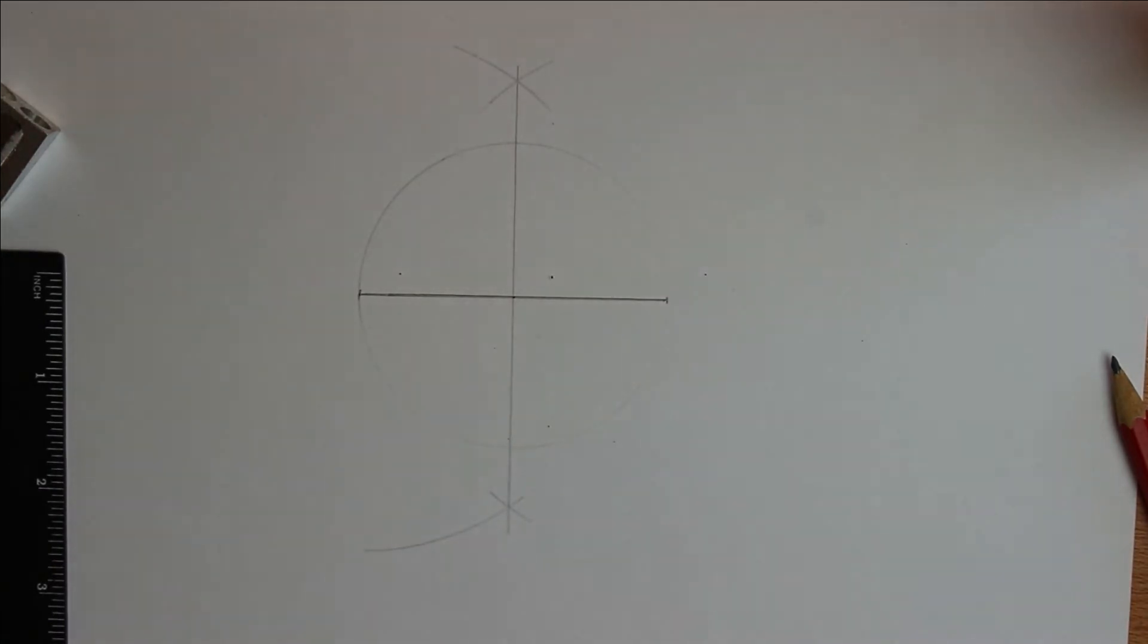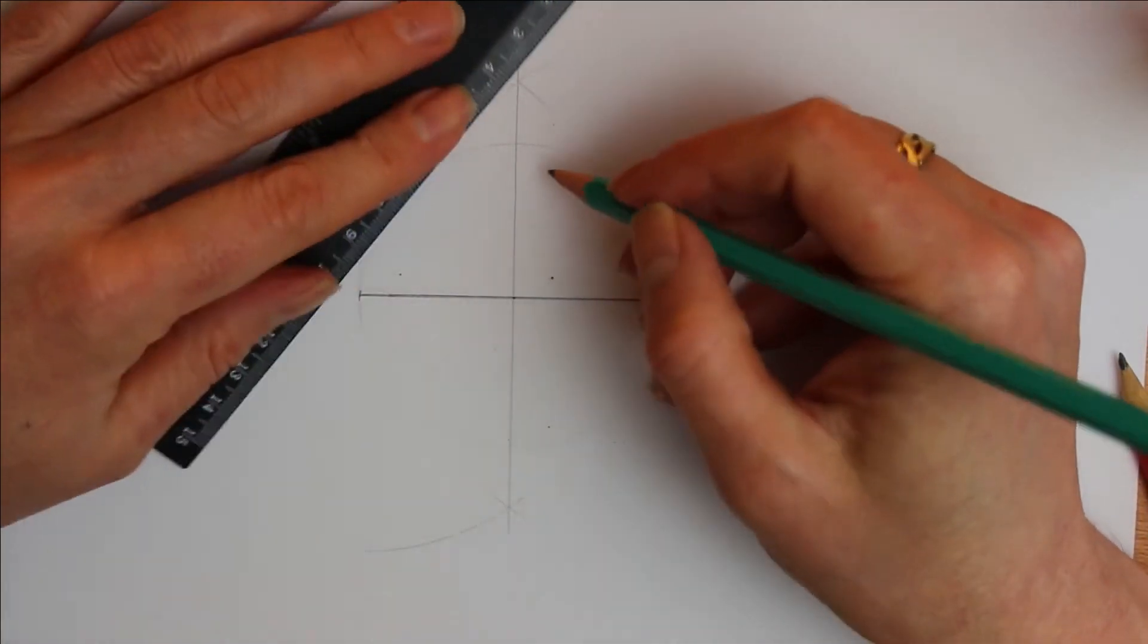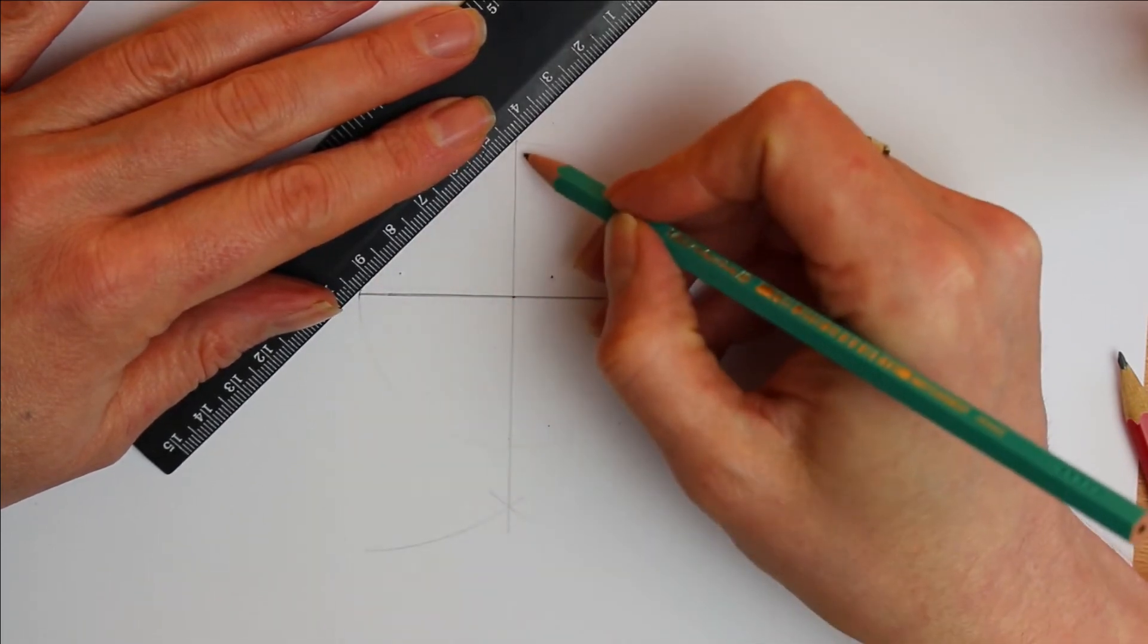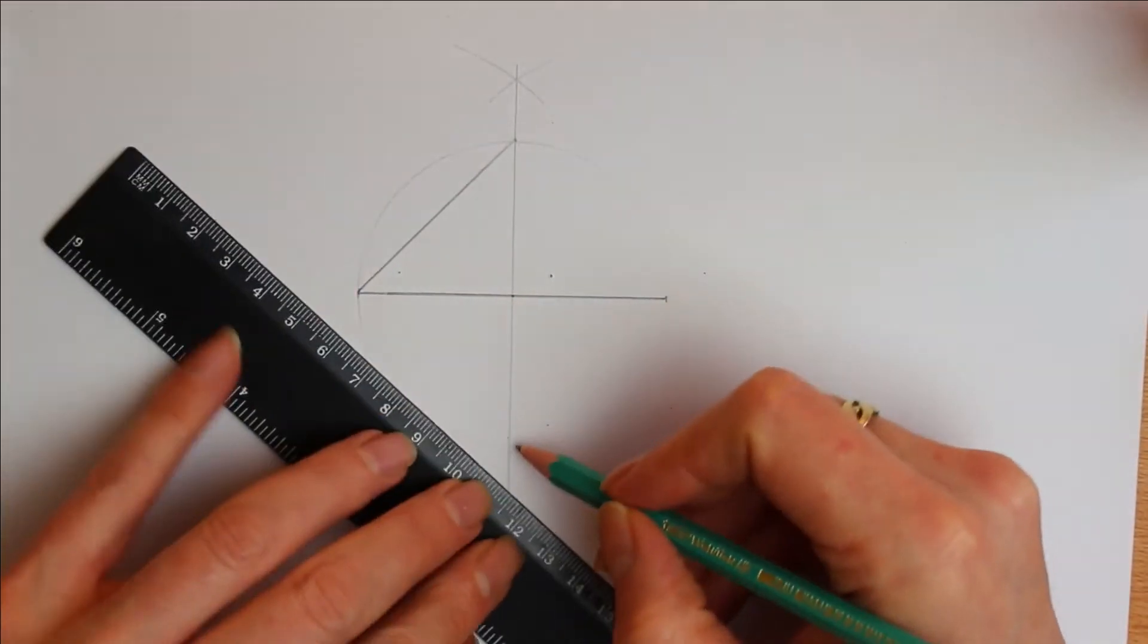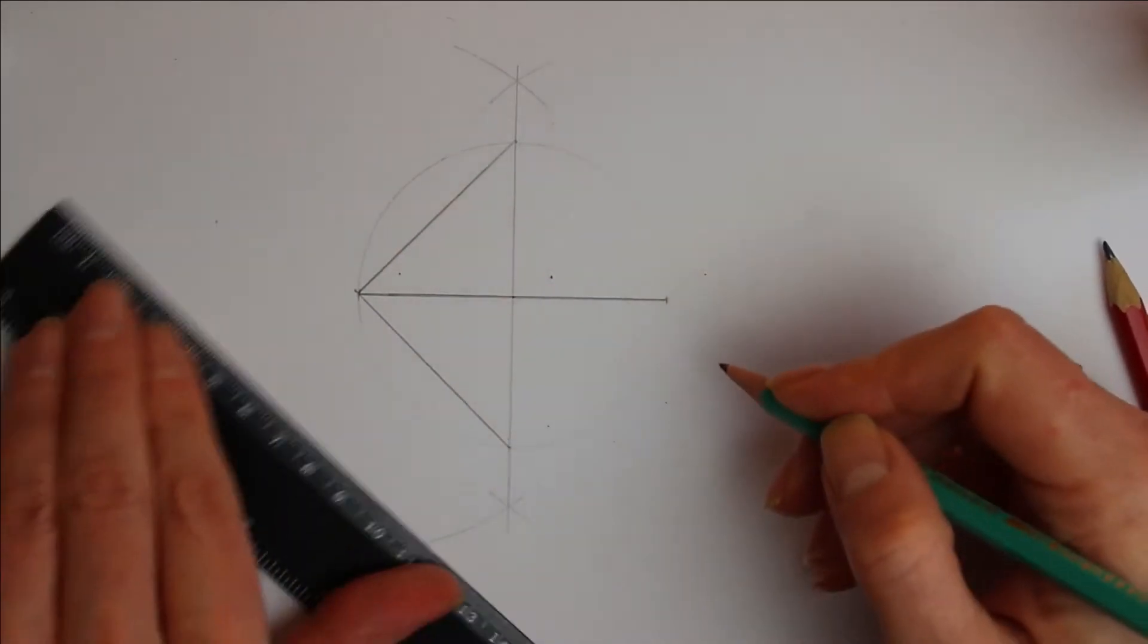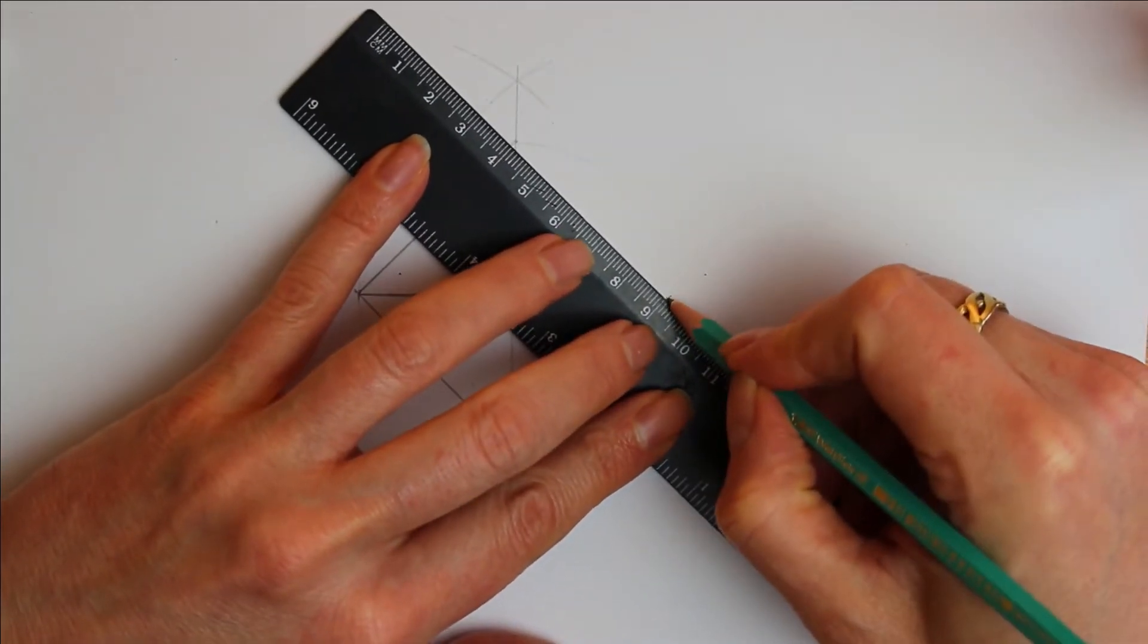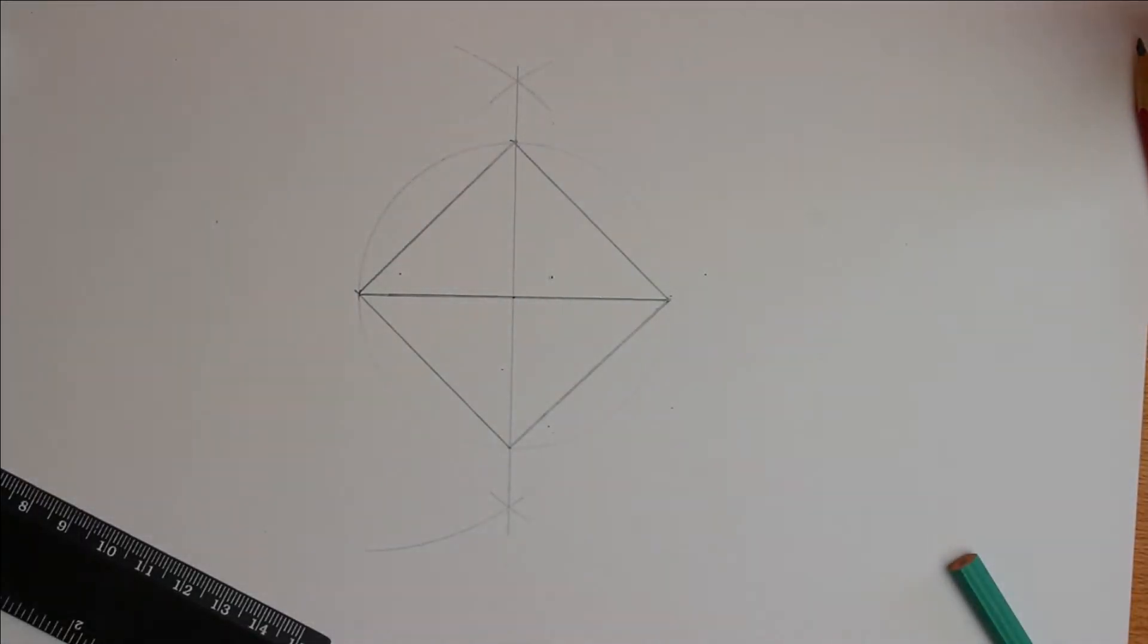Let's move on to step three. Step three, we're actually making the square here. So what we do is we just join up where the lines intersect the edge of the circle. So there's one, two, three, four.